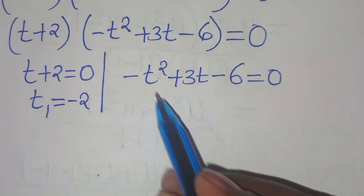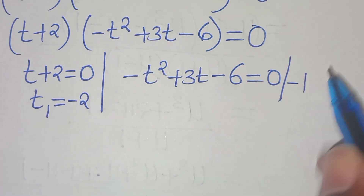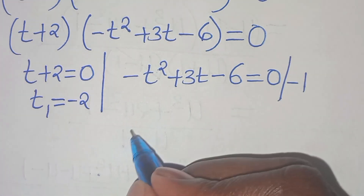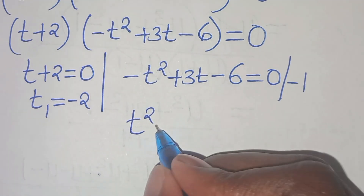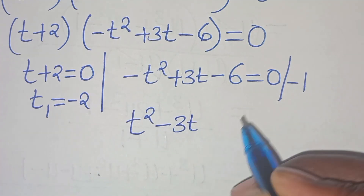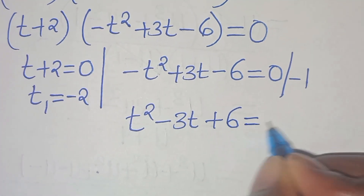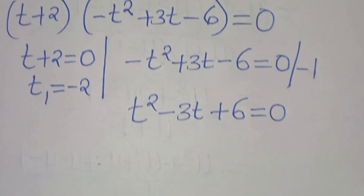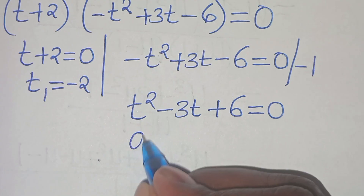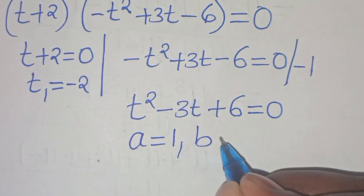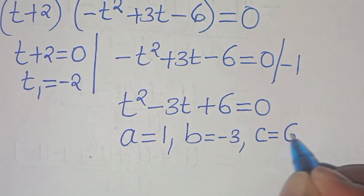For the second part, dividing through by minus 1, we get t squared minus 3t plus 6 equals 0. This is a quadratic equation where a equals 1, b equals minus 3, and c equals 6.